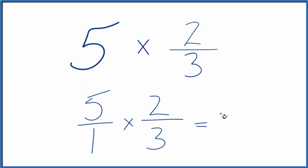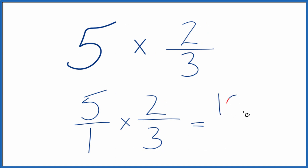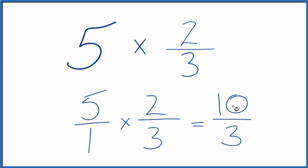So 5 times 2 is 10, and 1 times 3 is 3. So 5 times 2 thirds equals 10 thirds.